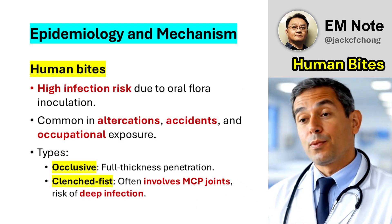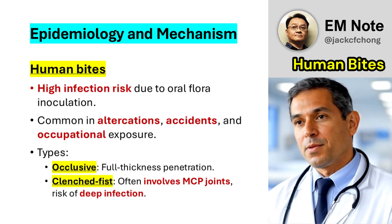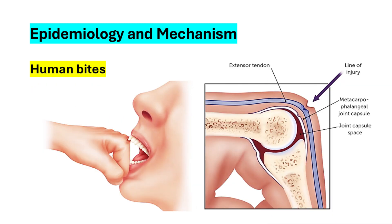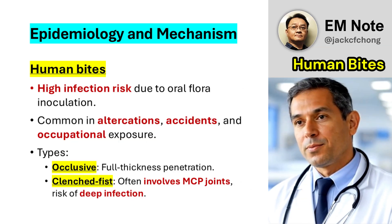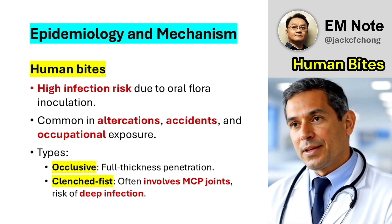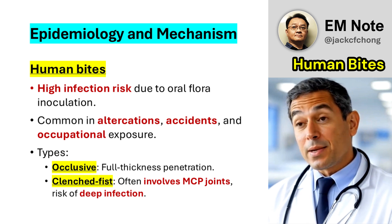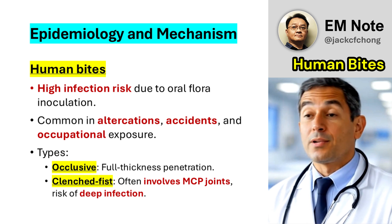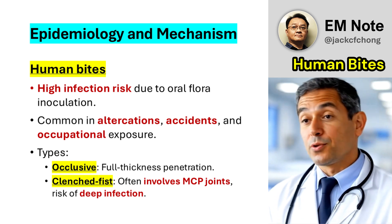Human bites occur in various settings, including altercations, accidental contact, and occupational exposure. The two primary types of human bites are occlusive injuries and clenched fist injuries.